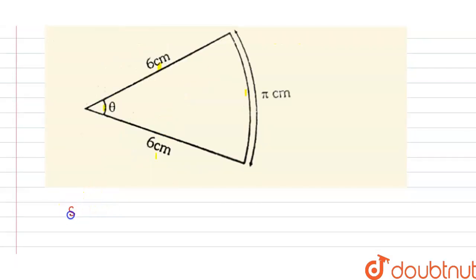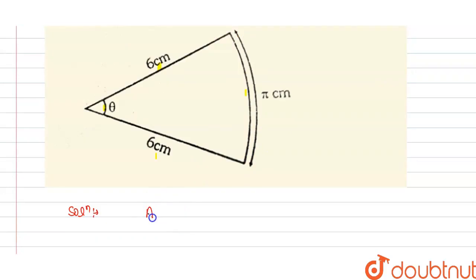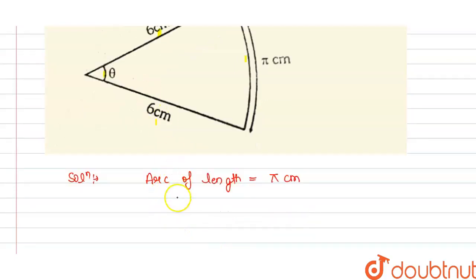So we can say that this is the sector of the circle. As from the diagram we can say that we have the arc of length, so length of arc is π centimeter, and we know that r is radius, that is r is 6 centimeter.